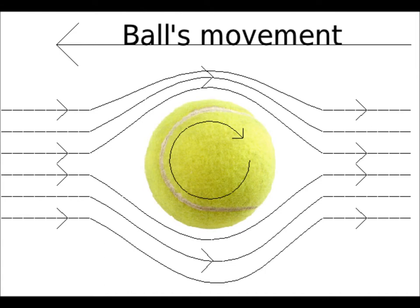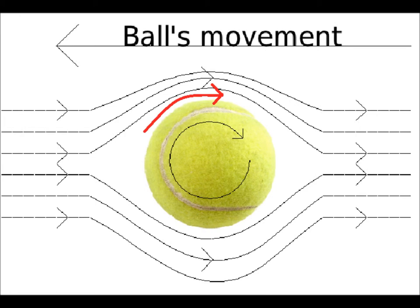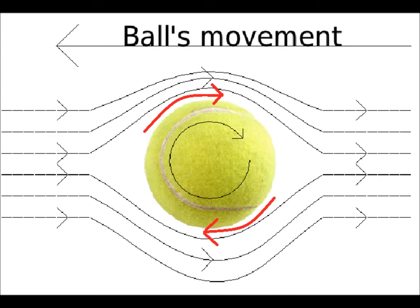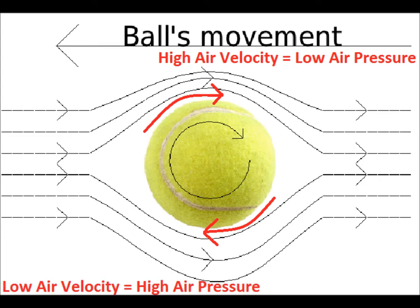In this picture, the ball is hit towards the left with backspin. The top half of the ball has the surface spinning in the same direction as airflow, which will increase the air velocity on top. The bottom half is spinning against the air, which will decrease air velocity.